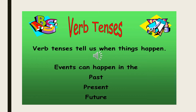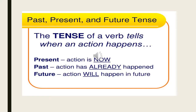A verb is an action word, and when we're talking about tenses we are going to talk about when the action was done. Events can be done in the past, they can be done now, and they can be done in the future. We have three forms: present, past, and future. The tense of a verb tells when an action happens.